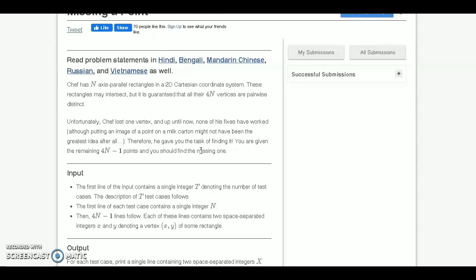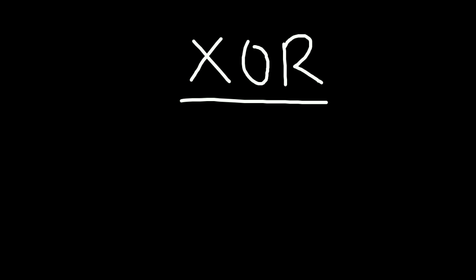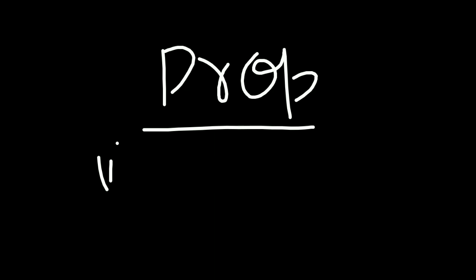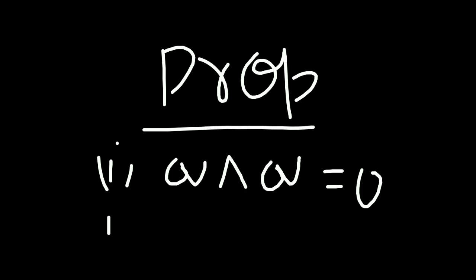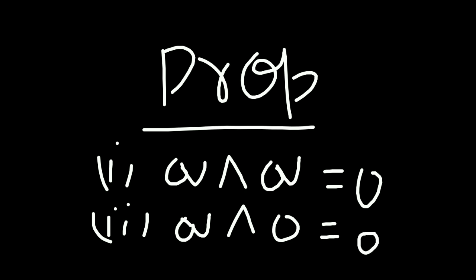We can solve this problem with the help of the XOR function. Now let us see how XOR will work. This is the symbol of the XOR function. The two main properties are: first, if we take XOR of a number with the same number, we get zero; and second, if we take XOR of a number with zero, we get the same number.